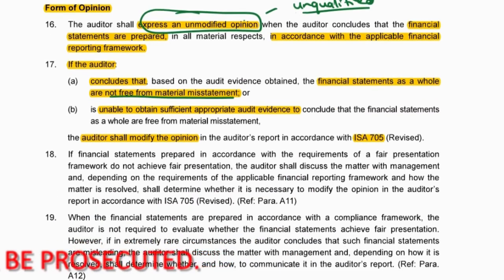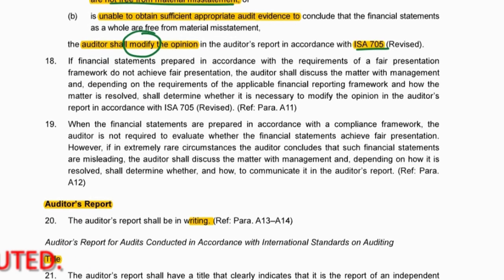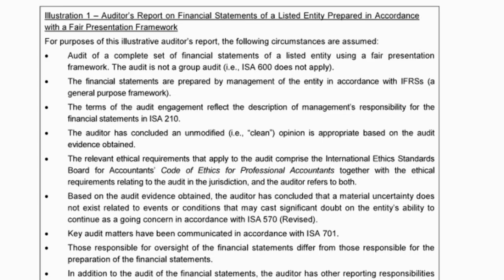If the financials are not free from material misstatement, we will need to modify the opinion according to ISA 705. The rest of the standard describes what the auditor's report needs to look like, but it is better to look at the actual auditor's report in the appendix to see illustrative examples.